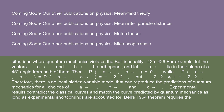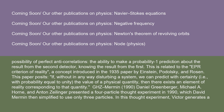Experimental results contradict the classical curves and match the curve predicted by quantum mechanics, as long as experimental shortcomings are accounted for. Bell's 1964 theorem requires the possibility of perfect anti-correlations — the ability to make a probability-one prediction about the result from the second detector, knowing the result from the first. This is related to the EPR criterion of reality, a concept introduced in the 1935 paper by Einstein, Podolsky, and Rosen, which posits: if without in any way disturbing a system we can predict with certainty the value of a physical quantity, then there exists an element of reality corresponding to that quantity.